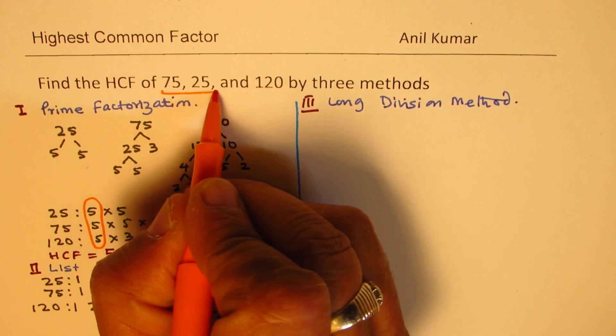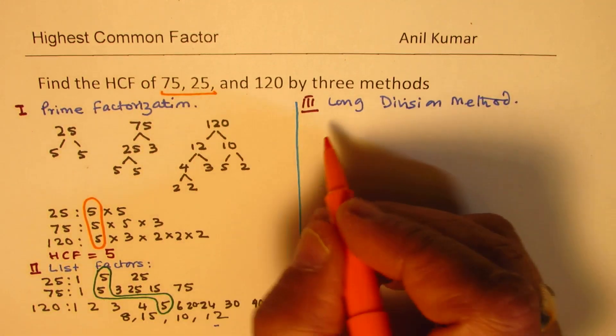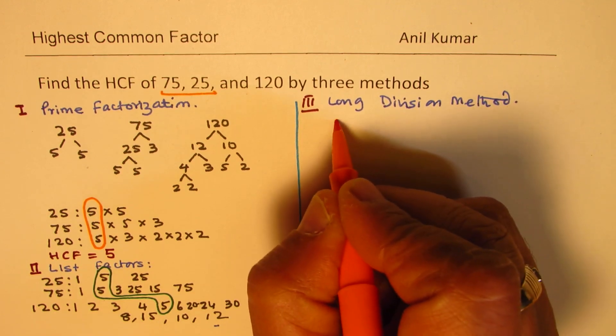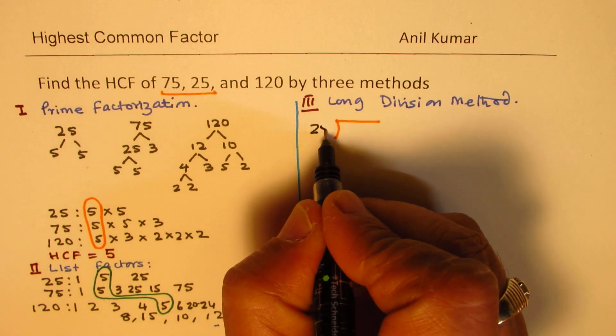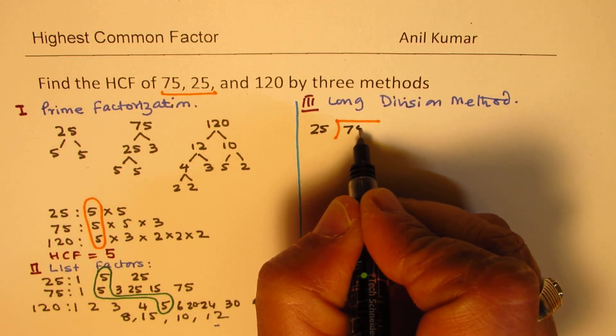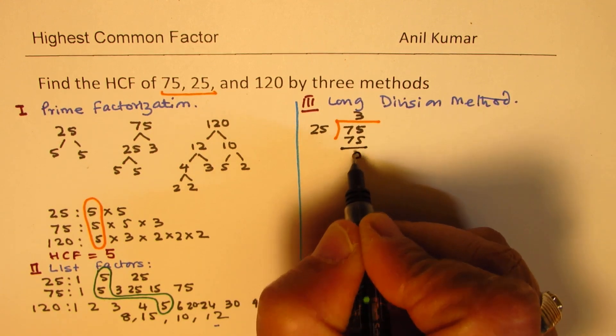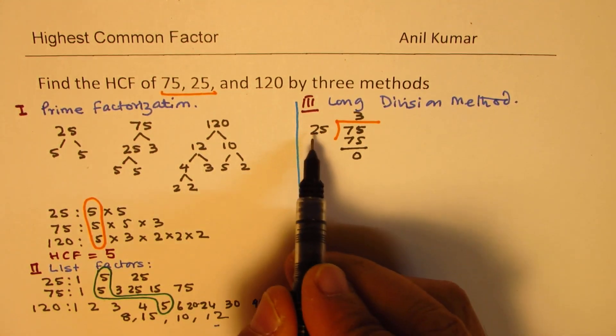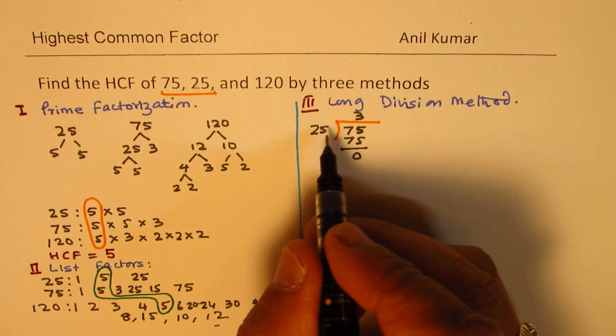So, here, let me take these two first, since we know 25 is a factor of 75. So, let me just begin with this. So, if I divide by 25, it's 3 times is 75. So, between 25 and 75, 25 is HCF.